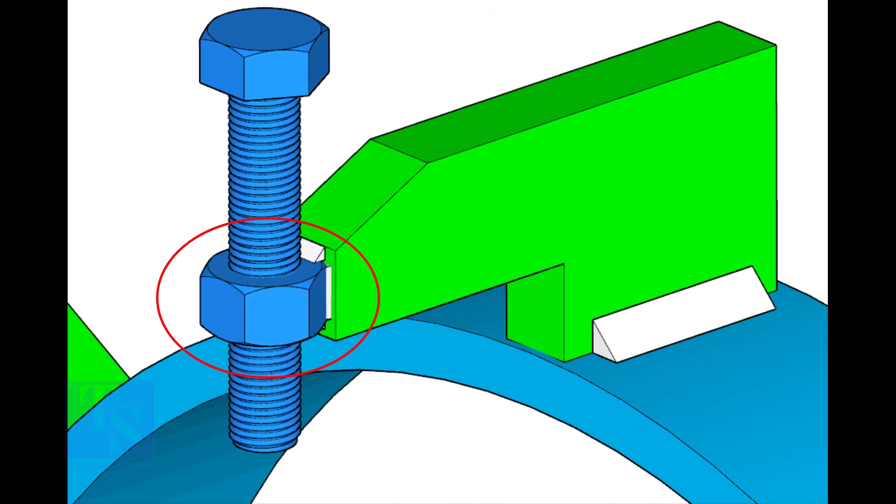The nut shall be welded with the L clamp from all around. This welding shall be a minimum of 5mm on both sides.